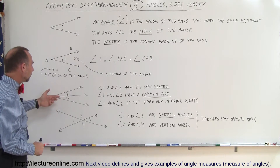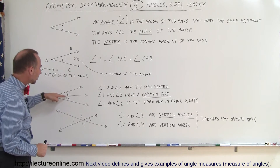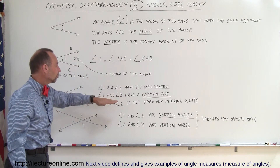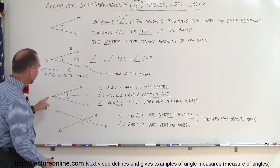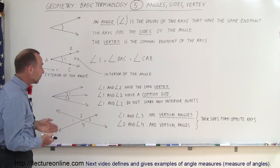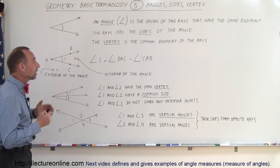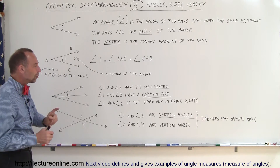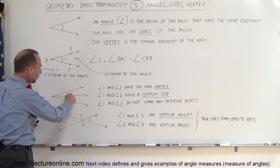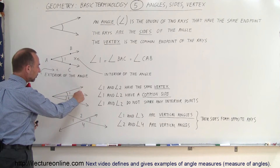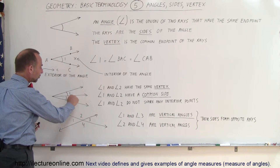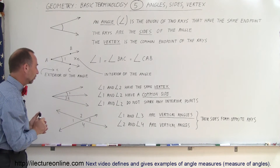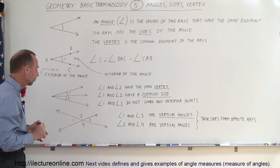Here we have two angles. Notice that the two angles have a common side. Angle number one and angle number two have a common side and also a common vertex, but the outside rays are not common to one another. They do not share any interior points. If you look at all the points inside angle number one and all the points interior of angle number two, there's no coincidence — they are not the same points and do not share any common points.